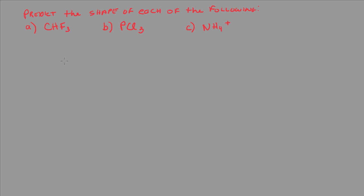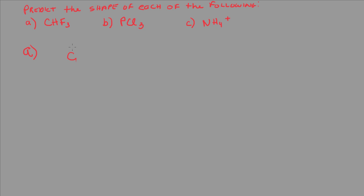Hi, here we're asked to predict the shape of each of the following species, so let's go ahead and start with A. First thing we have to do is draw the Lewis structure. For this compound, it's obvious that carbon is the central atom, and I'm going to go ahead and draw the basic skeletal structure.